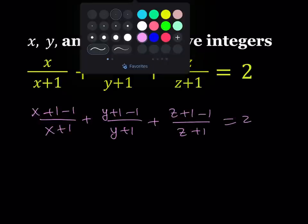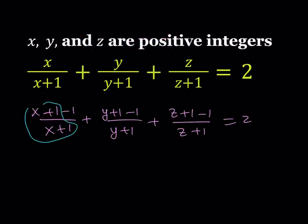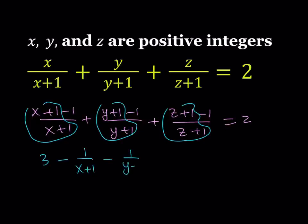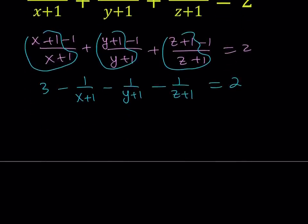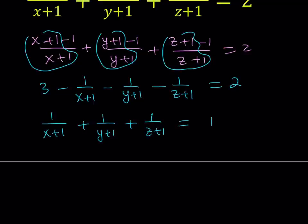From here, notice that we're going to be getting X plus 1 over X plus 1, which is 1, another 1, and another 1. So the sum of these 1's is going to be 3. We're getting 3 minus 1 over X plus 1 minus 1 over Y plus 1 minus 1 over Z plus 1, and the whole thing is equal to 2. We can take everything on the left hand side except for the 3 and put it on the right hand side, and we get 1 over X plus 1 plus 1 over Y plus 1 plus 1 over Z plus 1 equals 3 minus 2, which is 1. So now we have the sum of 3 reciprocals and it equals 1.